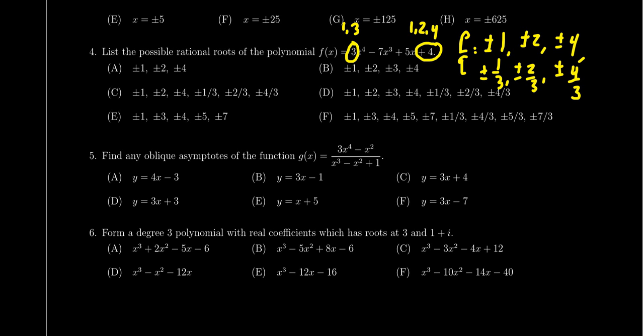So these 12 possibilities, because we do consider positive and negative, these are the possible rational roots. And so then we see that list is exactly choice C, which is the correct answer.